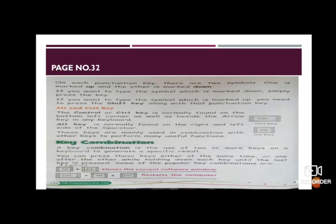Starting with key combination — it's on page number 32. As the name implies, key combination is the use of two or more keys to generate a result, like the Alt and Control keys. If you press only the Shift key or Alt key, no function will perform. Some other key must be pressed along with them to generate a specific result. That is key combination — pressing two or more keys at the same time.